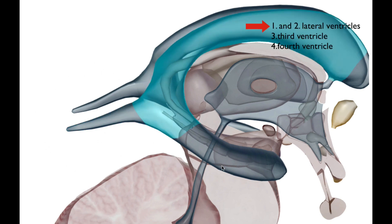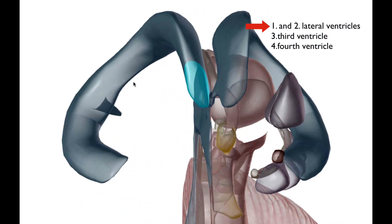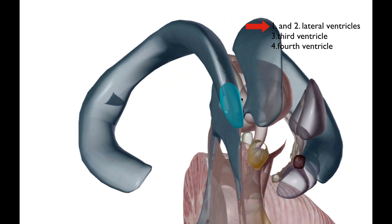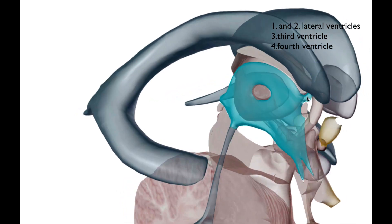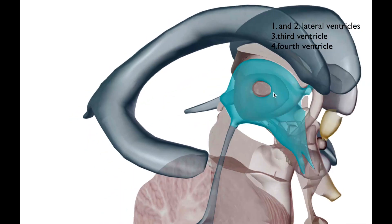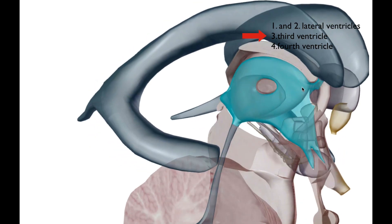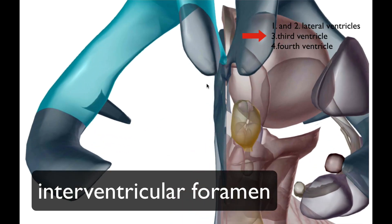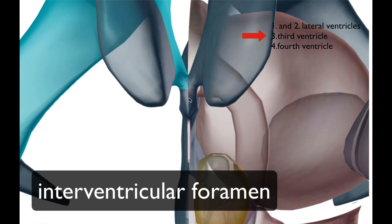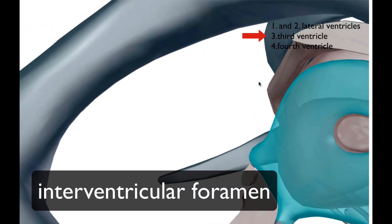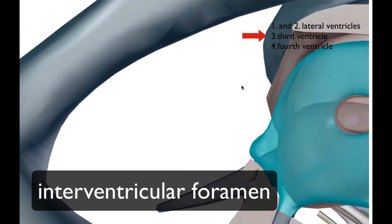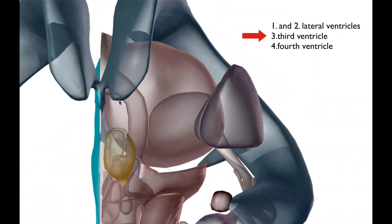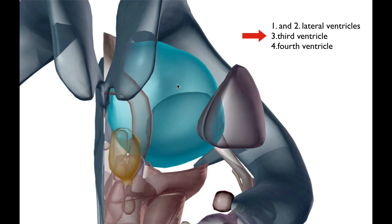So that's four parts to the lateral ventricles. Now, all of these chambers are connected with each other. Connecting the lateral ventricles with the third ventricle is what's called the interventricular foramen — 'inter' meaning in between. Let me zoom in right here so you can get a better look at this foramen. This is the interventricular foramen, and here is the third ventricle.